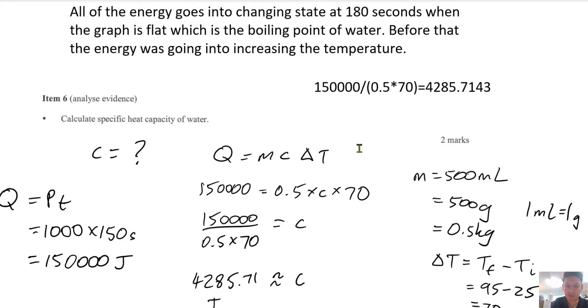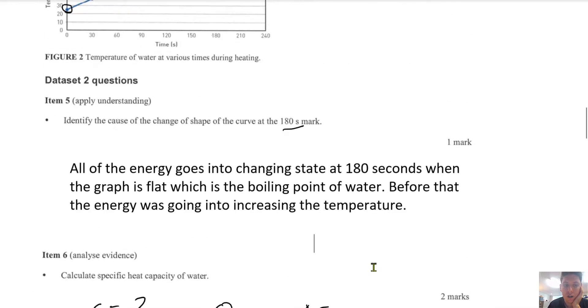And this is in joules, kilograms to the negative one, degrees Celsius to the negative one. That's the units for C. Alright. Next. So that's question two, or item six.